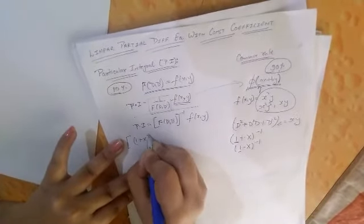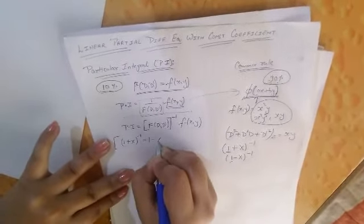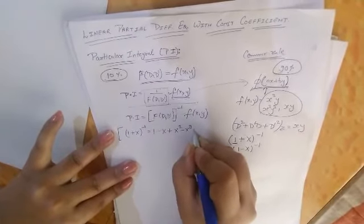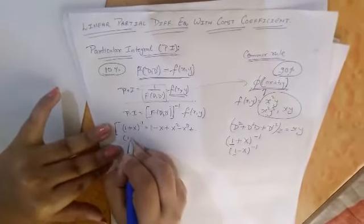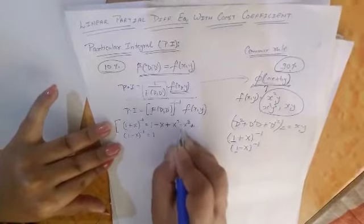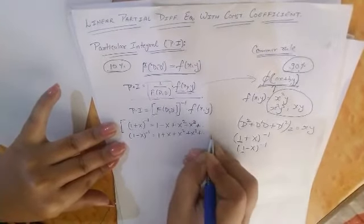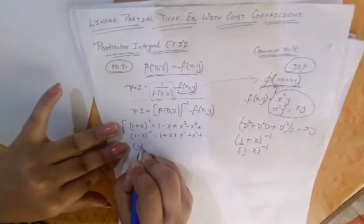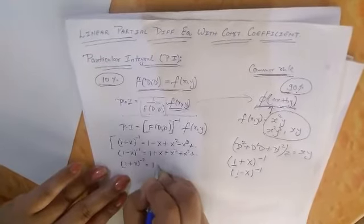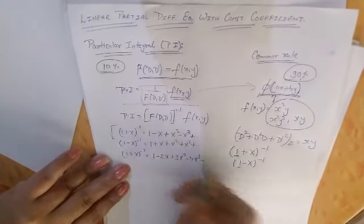But first of all you need to know that (1+x)^-1, the expansion of this function is 1 - x + x² - x³ and so on. And if you have (1-x)^-1, in this case all terms will have positive signs. Similarly, if you have (1+x)^-2, in this case we have 1 - 2x + 3x² - 4x³ and so on.